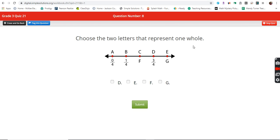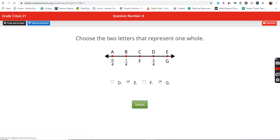Choose the two letters that represent one whole. Okay, so we know that a whole is when our numerator and our denominator are the same. So that is going to be four fourths. And four fourths is also equal to E. So E and G are one whole.